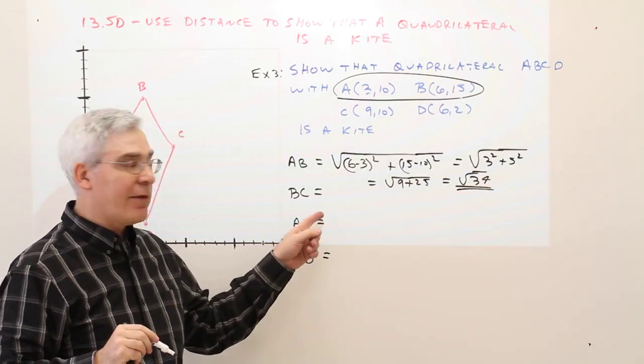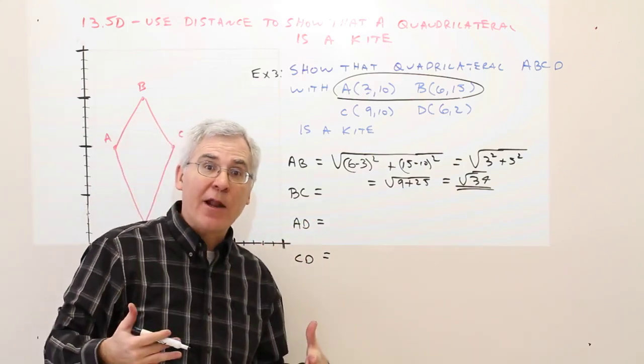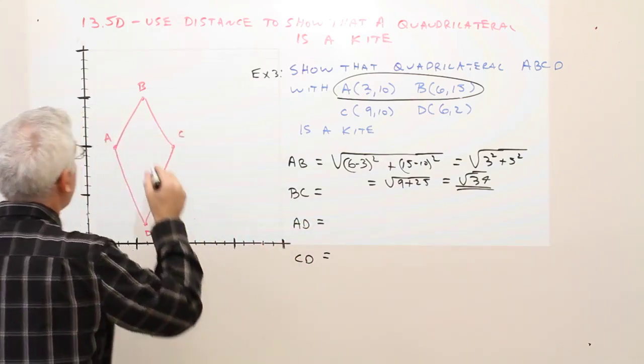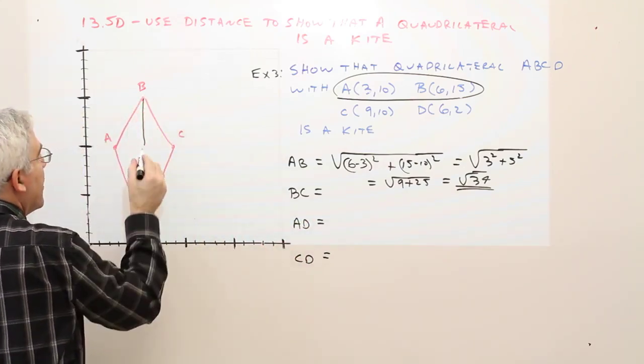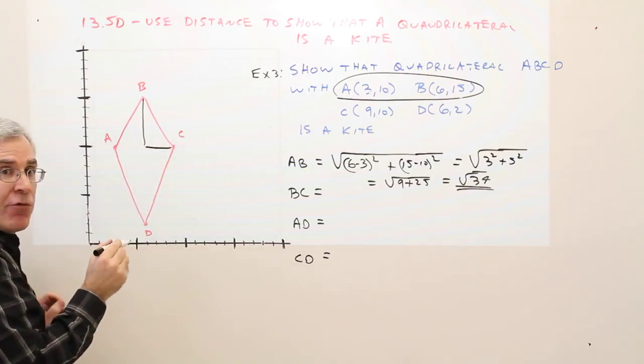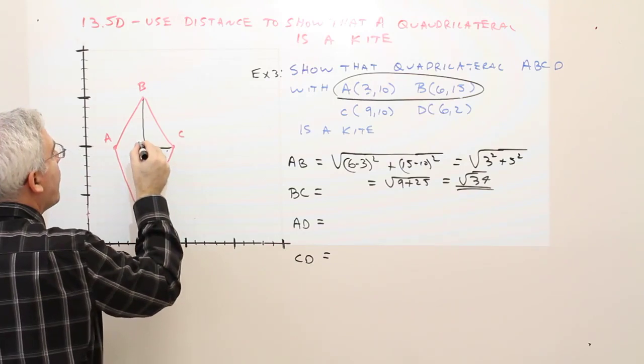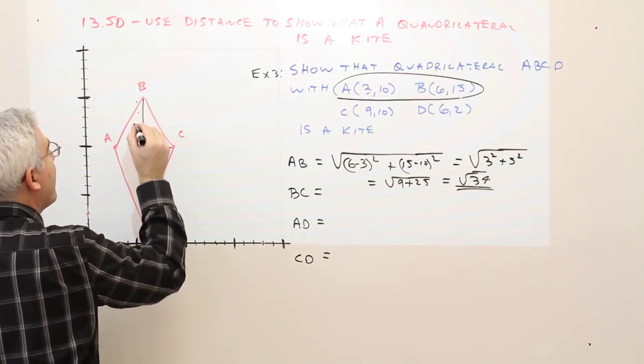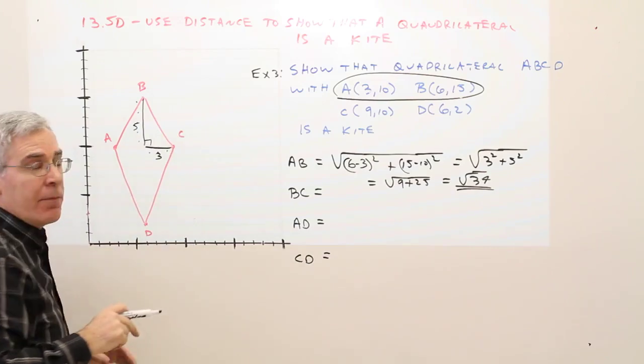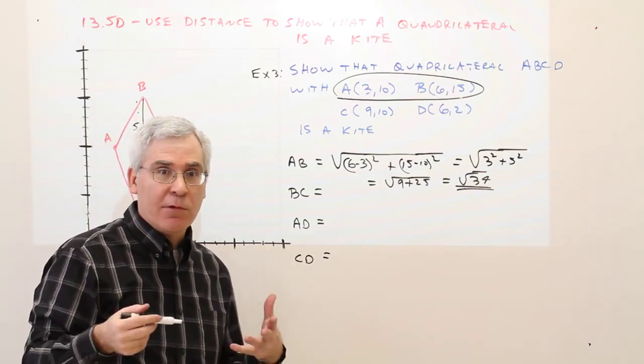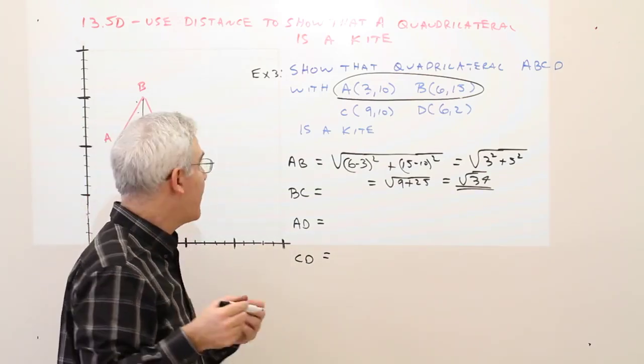Let's try to find the distance from B to C, and I'll show you how to use the Pythagorean theorem. So you could just construct a right triangle with 1, 2, 3 for that leg, and 1, 2, 3, 4, 5 for that leg. So I know that hypotenuse squared equals leg squared plus leg squared.